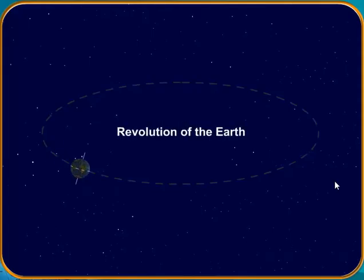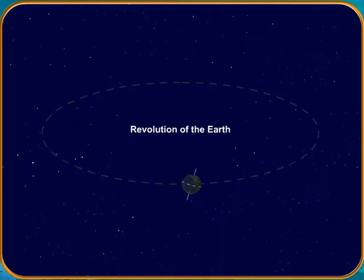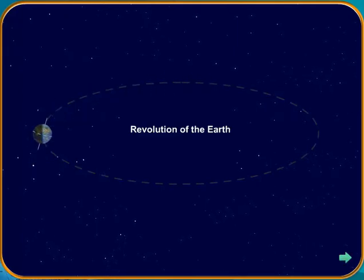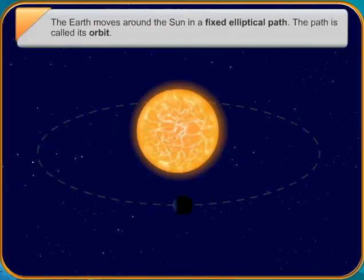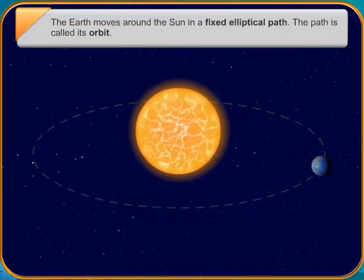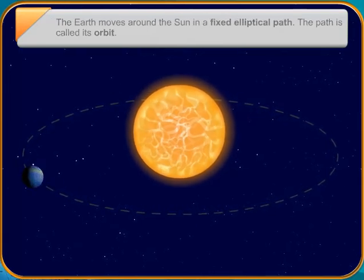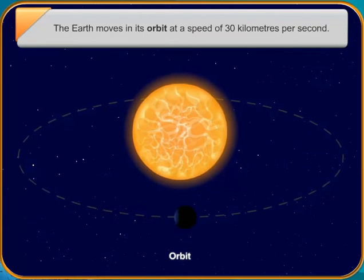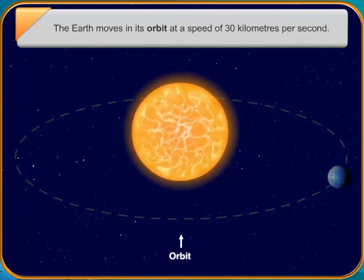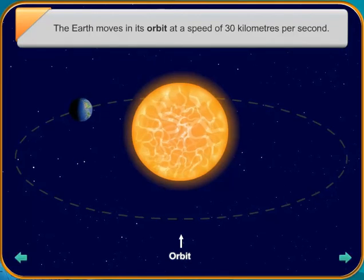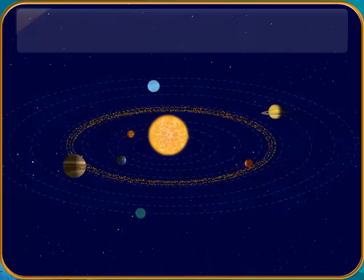Though the Earth takes 365 and one-fourth days to complete one revolution around the Sun, we take 365 days as one year. The remaining one-fourth days are added to the year after every four years. The year with 366 days is called a leap year. In a leap year, we add the extra day to February.